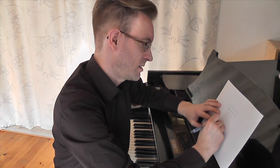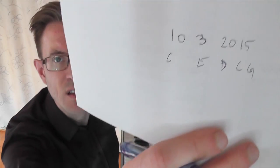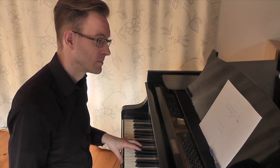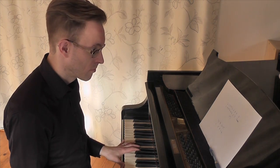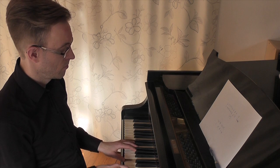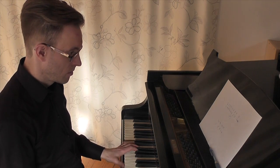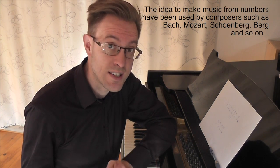So we get: one is C, zero must be a break, which gives us C, E, D, C, G. It sounds like this. If you want to, of course, you can add chords. So from a very basic number you can get a series of nice keys. Start making music from this basic idea — that's my suggestion.